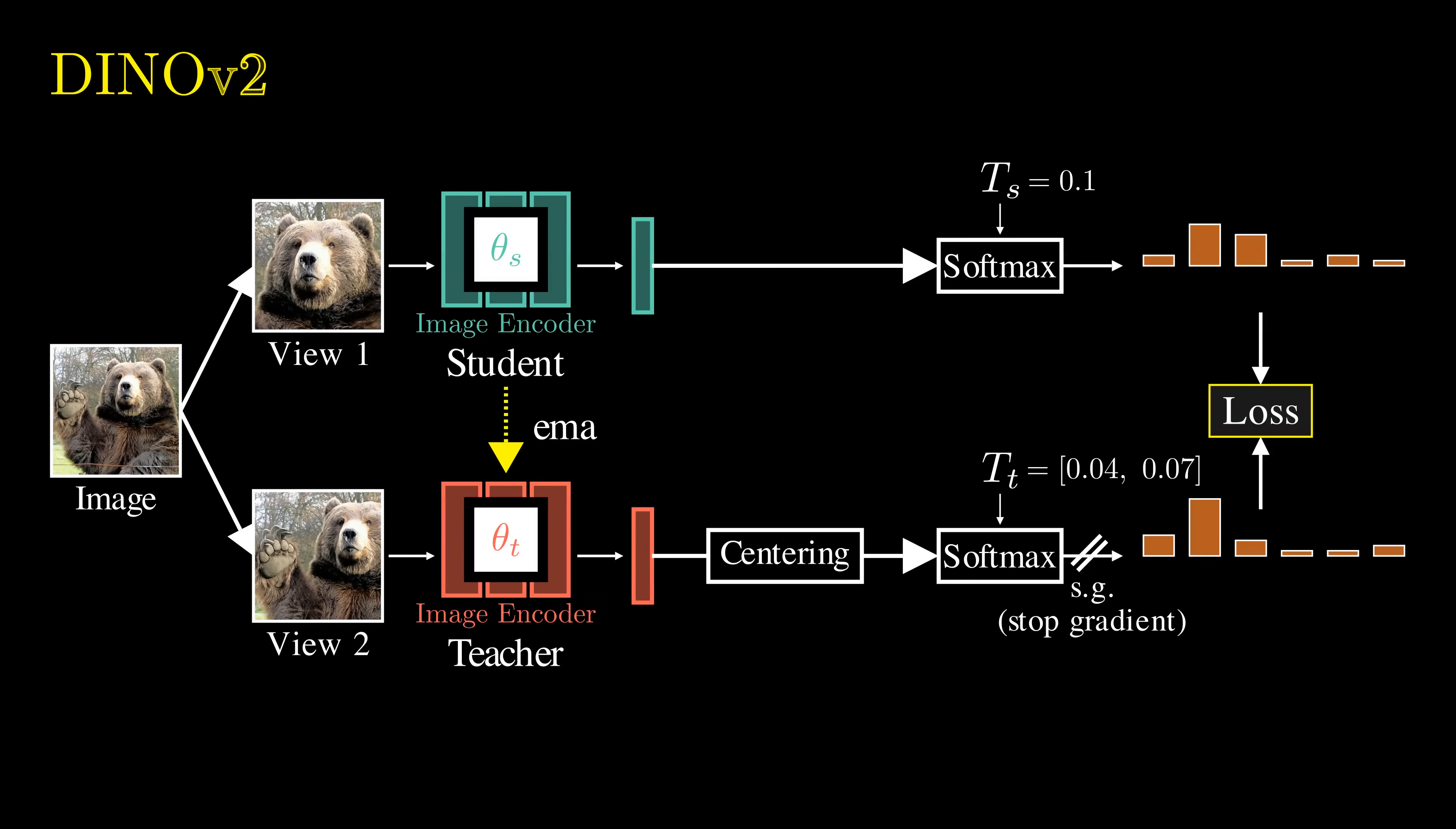In the second version, the researchers enhance the method by implementing better centering techniques for the logits, introducing a regularization term to encourage more diverse feature learning, and expanding the output dimensions to 128,000. They also scale the training dataset to 142 million images and increase the training batch to 3,000. One interesting improvement is adding patch level losses.